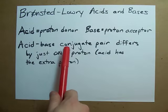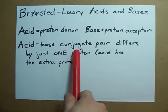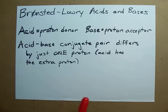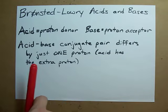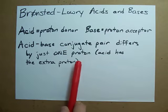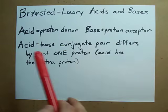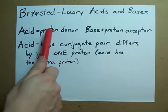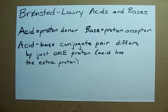Acid-base conjugate pairs, or conjugate acid-base pairs, are two chemicals that differ by just one proton. The acid is the one with the extra proton, because the acid is the one that can donate the proton.